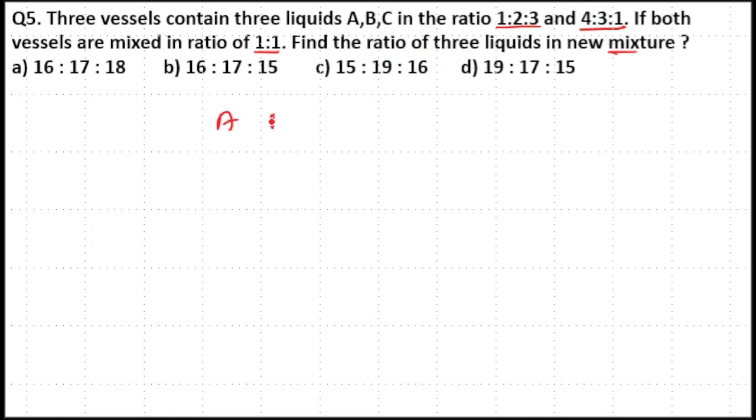We have A, B, C in the ratio. First vessel A, B, C in the ratio 1 is to 2 is to 3 and in second vessel A, B, C in the ratio 4 is to 3 is to 1.